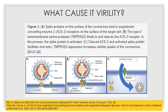For the coronavirus to bind to the host cell, it needs a receptor known as ACE2. ACE stands for angiotensin-converting enzyme, which is a key player in regulating the renin-angiotensin system in the human body — a system that regulates human blood pressure.